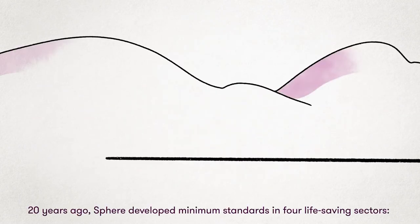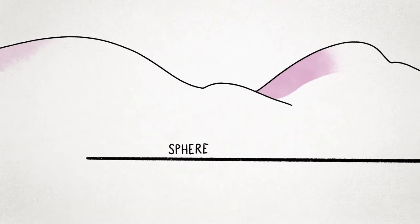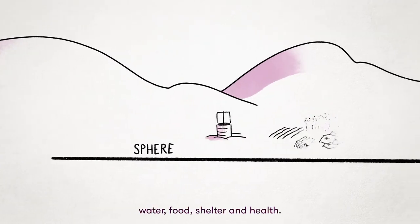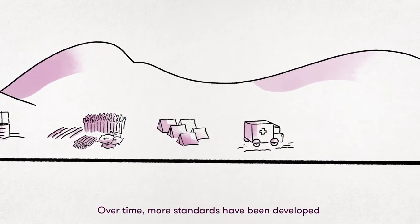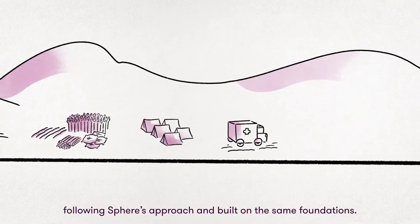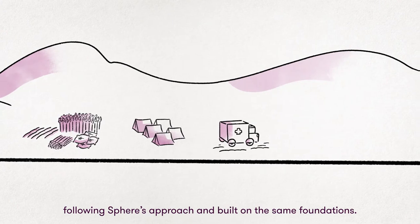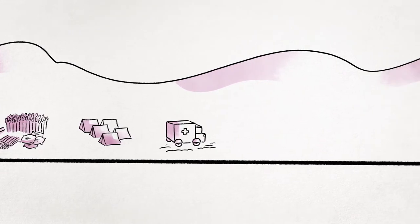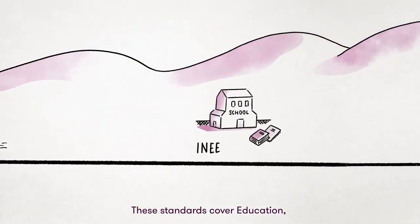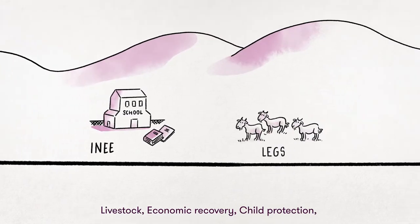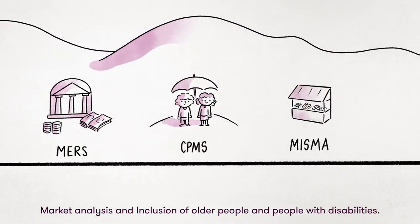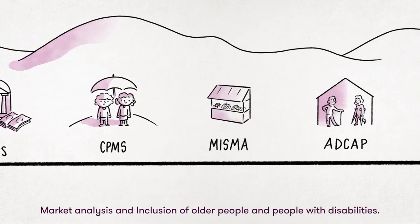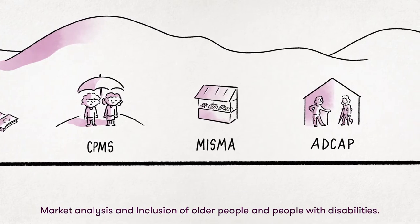Twenty years ago, Sphere developed minimum standards in four life-saving sectors: water, food, shelter, and health. Over time, more standards have been developed following Sphere's approach and built on the same foundations. These standards cover education, livestock, economic recovery, child protection, market analysis, and inclusion of older people and people with disabilities.